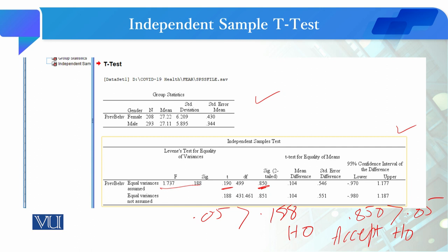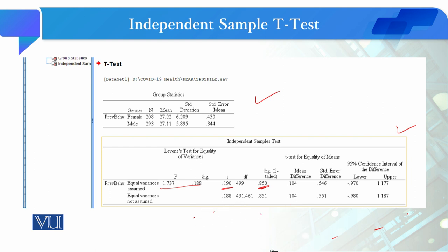There is no difference in the means on the basis of gender in the preventive behavior of the respondents. So the alternate hypothesis is rejected and the null hypothesis is accepted. Looking at the descriptive information: male mean preventive behavior is 27.22 and female mean is 27.11. So the female score is slightly higher than the male score, but this difference of 0.104 is not statistically significant.